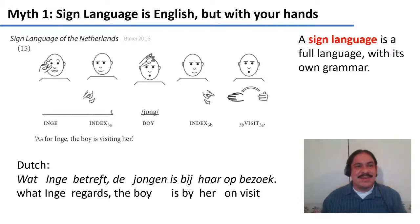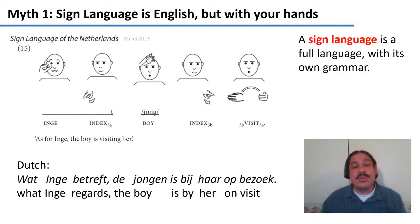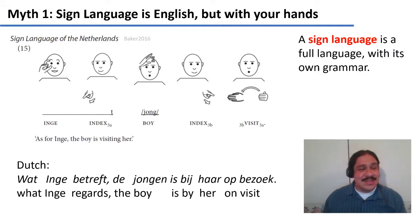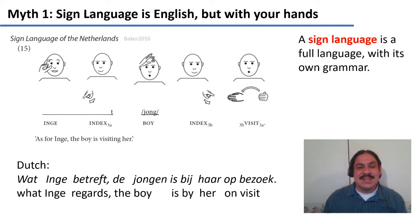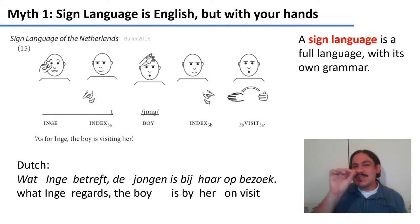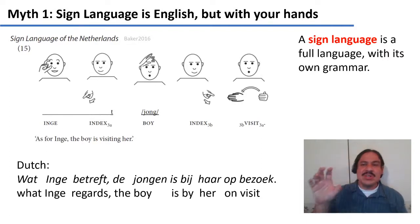Here is another example — a sentence from the sign language of the Netherlands. In English it would be: 'As for Inge, the boy is visiting her.' The order of the signs in the sign language of the Netherlands is: Inge, her, boy, him, he visits her. As you can see, this is very different from Dutch word order. There's practically no correspondence between the signs in Dutch Sign Language and the words in Dutch. Likewise, there's no correspondence between words in an English sentence and the order of an ASL sentence. ASL is a full language and a different language from English.